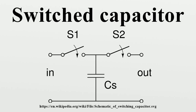The simplest switched capacitor circuit is the switched capacitor resistor, made of one capacitor C and two switches S1 and S2, which connect the capacitor alternately to the input and output at a given frequency. Each switching cycle transfers a charge from the input to the output at the switching frequency.